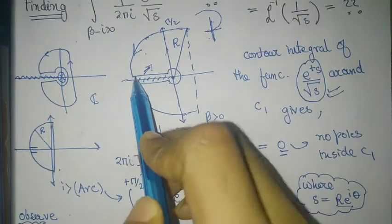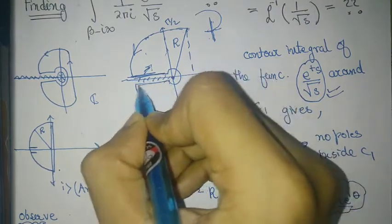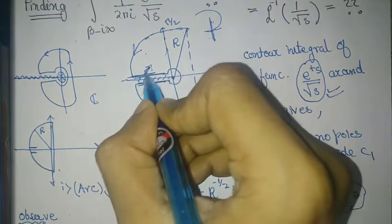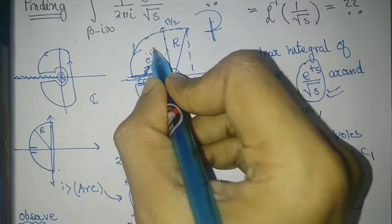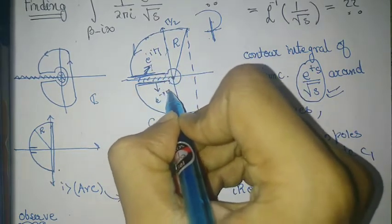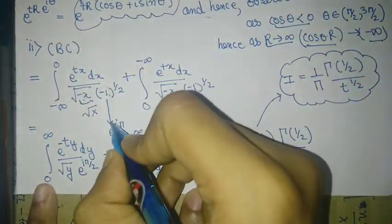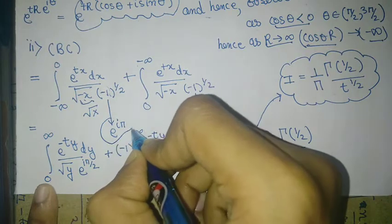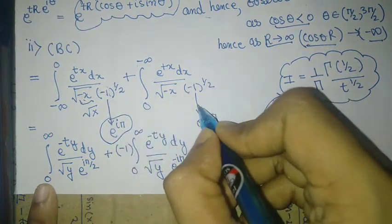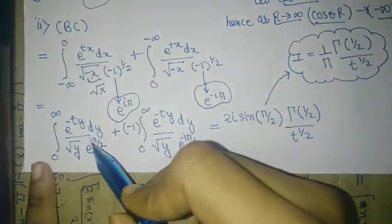So that's what I have written. So here, as this point is above here, this is the first integral that I am showing and this is the second integral. As this is above, it takes value e power i pi and this takes value e power minus i pi. So these are the exact point where the branch cuts makes the difference.